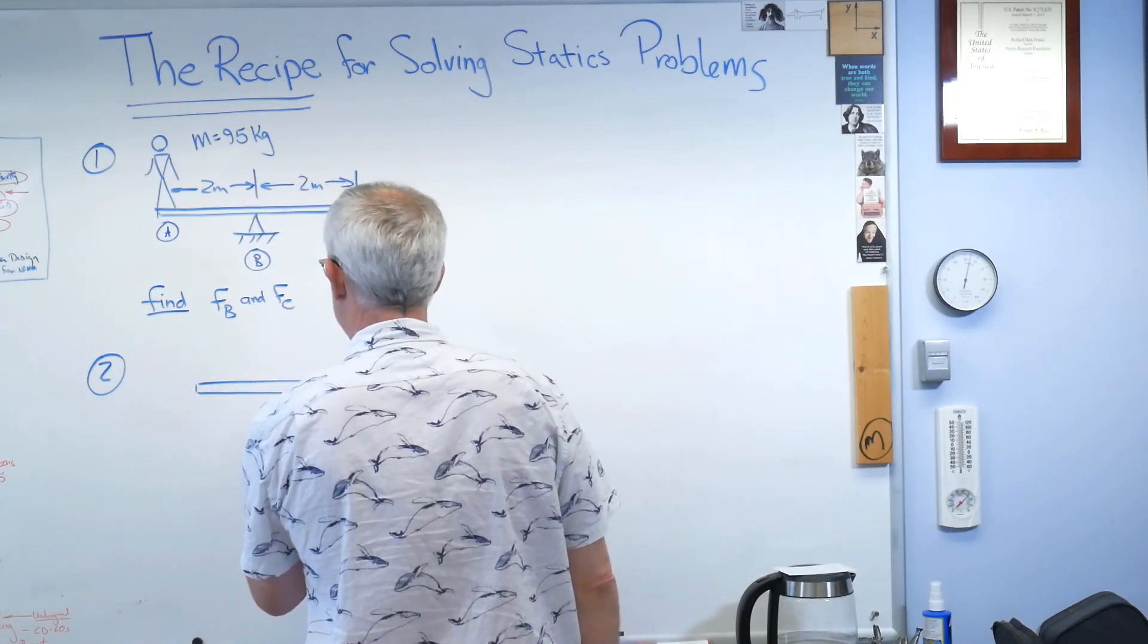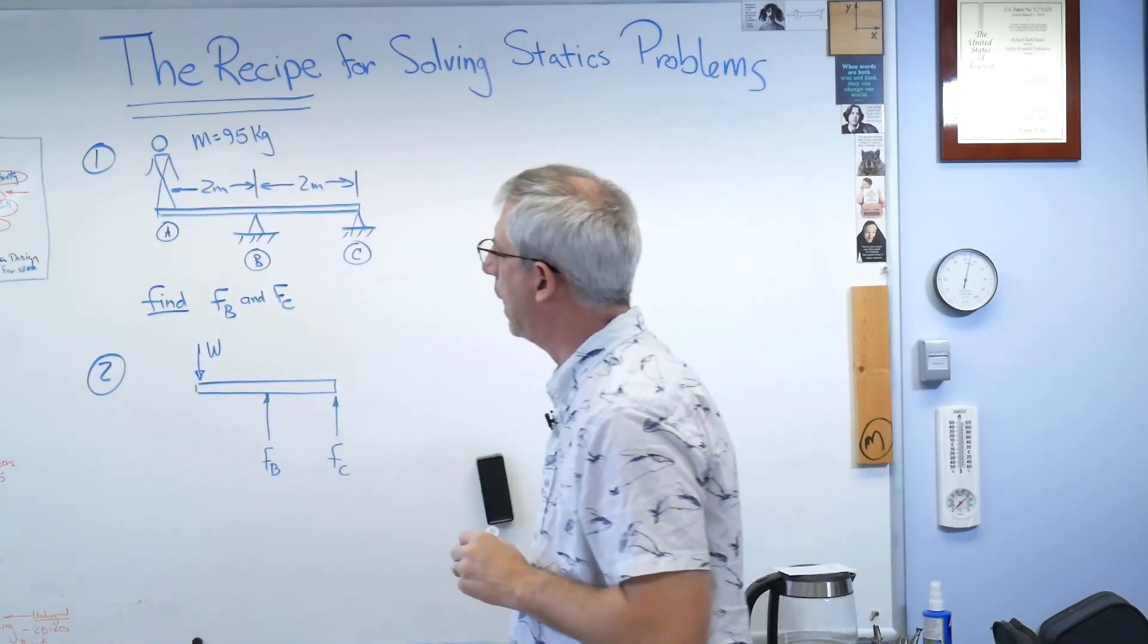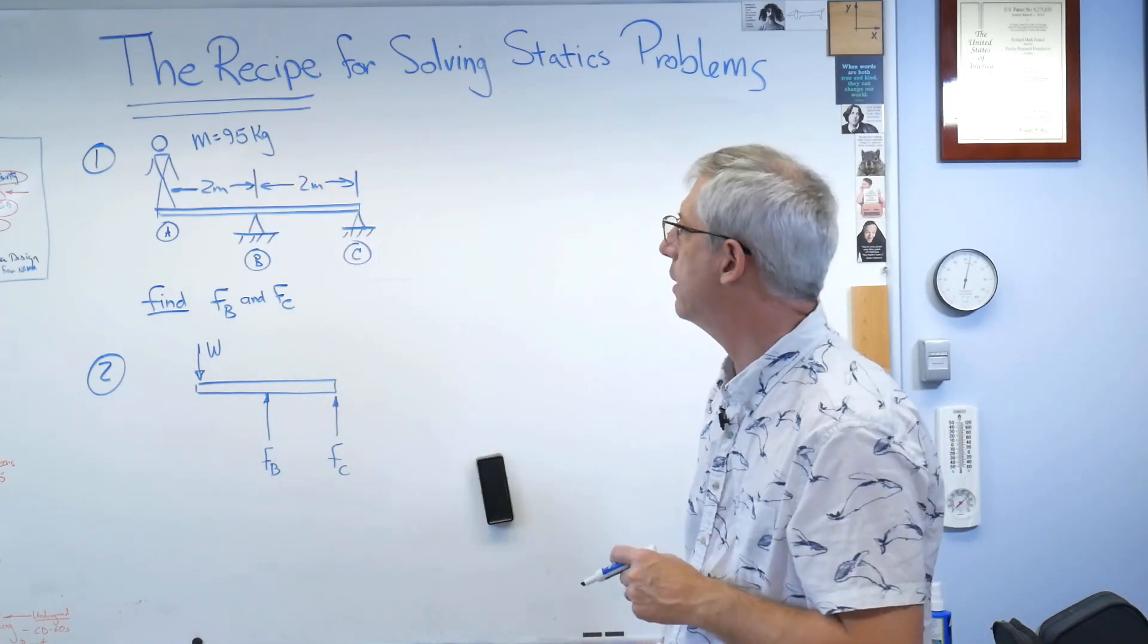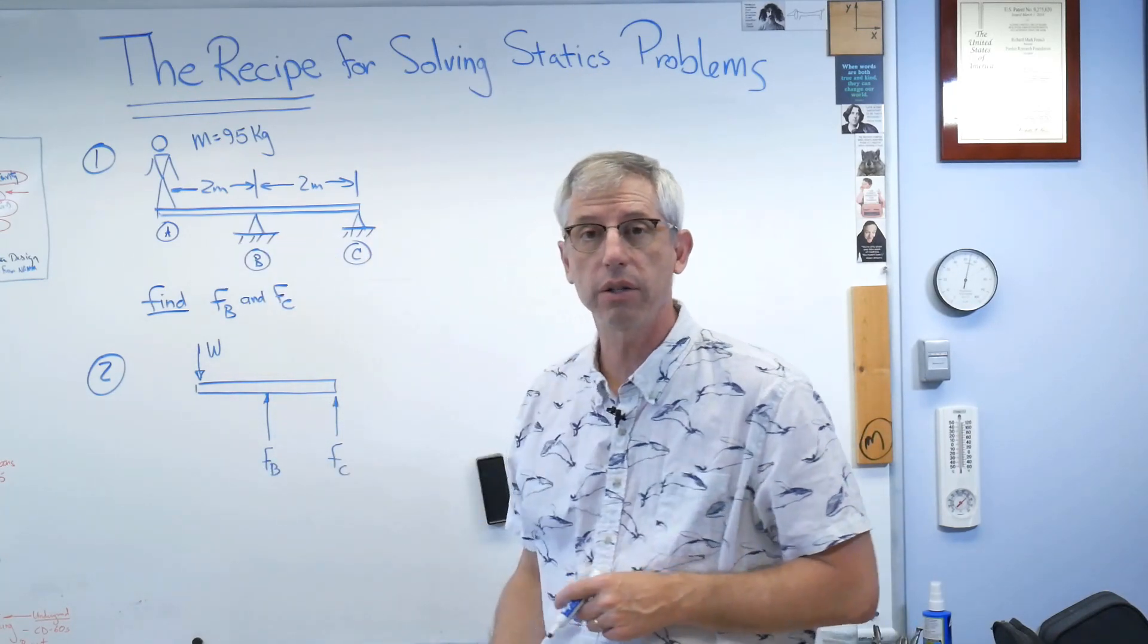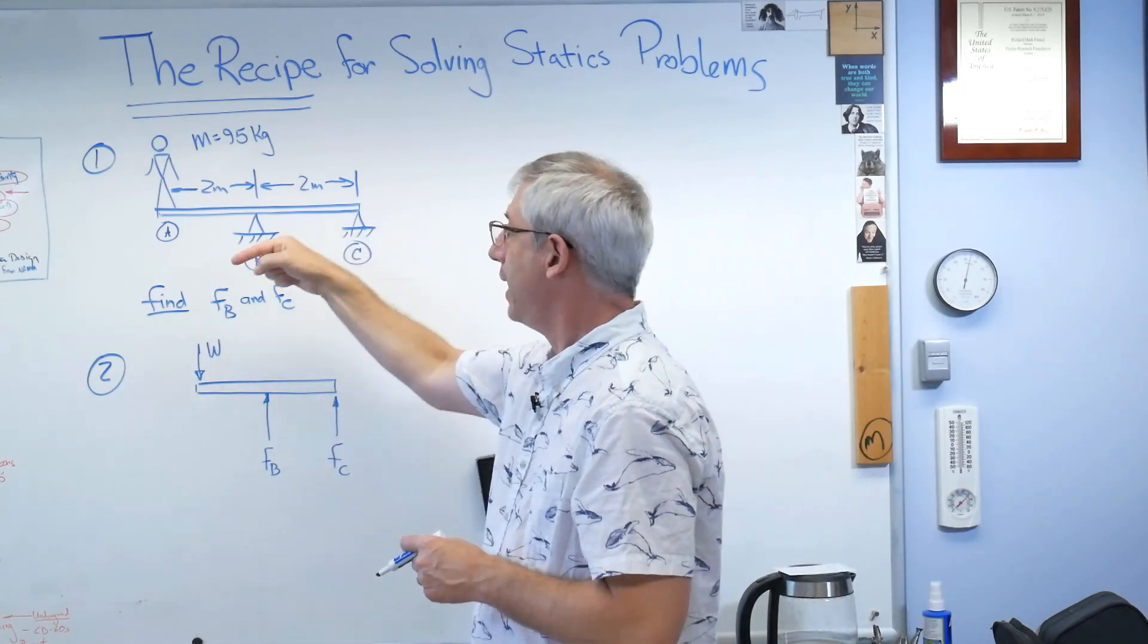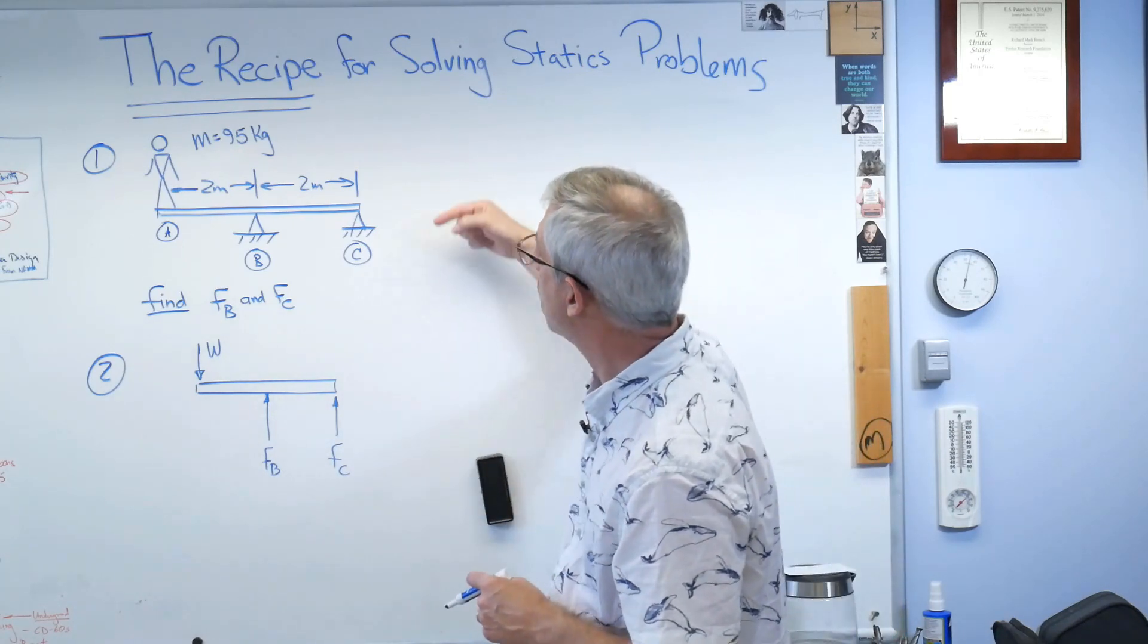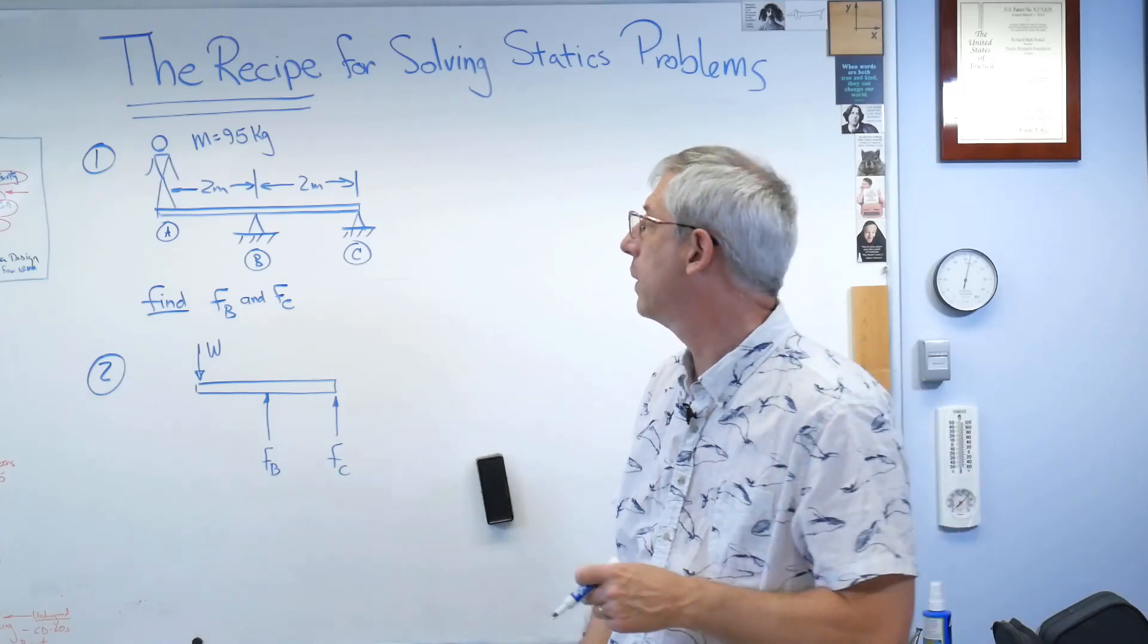So step two, draw the free body diagram. Okay, let's just draw that here. And this gets a lot simpler. Okay, so we've got here is a middle-aged engineering technology professor who's maybe eaten a few more cookies than he should have. But there it is. And we have replaced these pin connections at B and C with the forces in the vertical direction that they would bear. Now, these are pins. They can bear forces in the horizontal direction. There's not any in here because there are no forces in the horizontal direction.